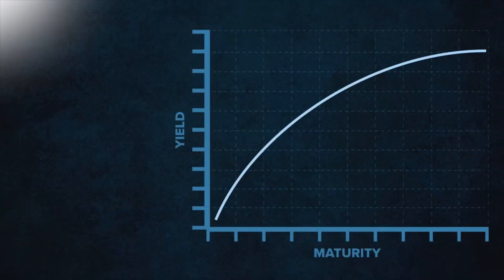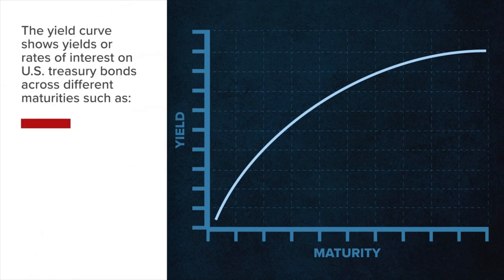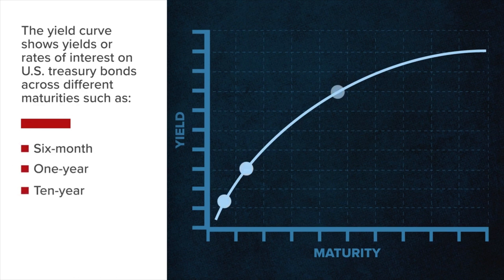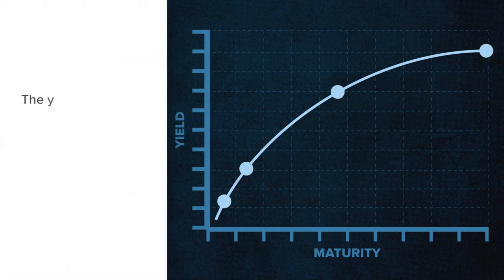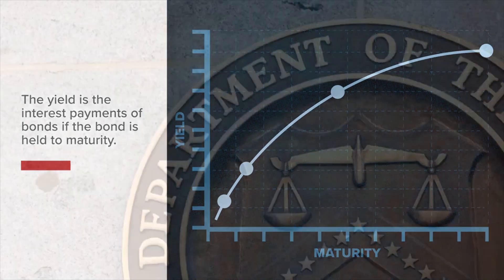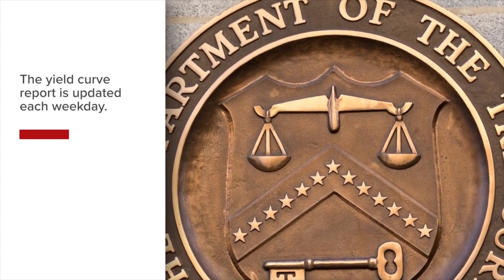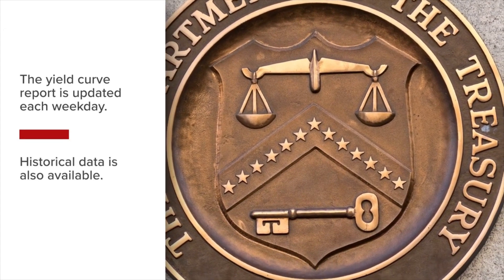The yield curve shows yields or rates of interest on U.S. Treasury bonds across different maturities such as the 6-month, 1-year, 10-year, and 30-year maturities. The yield is the annualized return received through interest payments that a new buyer of bonds can expect upon purchasing, if the bond is held to maturity. The U.S. Treasury Department bases the yield curve report on bond yields in the open market and is updated each weekday. Historical data is also available.